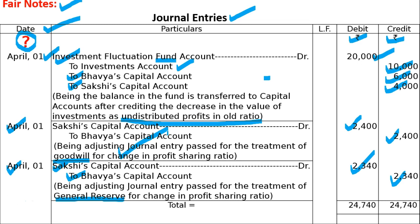This was all about the answer. After totalling the journal, the total amount comes to 24,740. If I have explained this well and you have understood, please like, share, and subscribe to my videos so that you continue to receive good quality videos.